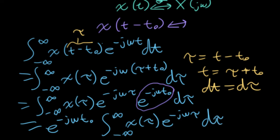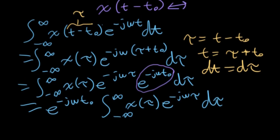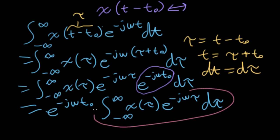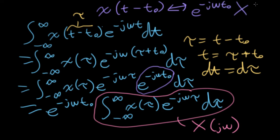And oh, this looks amazingly familiar. This whole thing here, what is this? Well, this is just the Fourier transform of little x. This is big X of j omega. So now I can say that a shift in the time domain corresponds to a multiplication by e to the minus j omega t naught, whatever that time shift is, in the frequency domain.